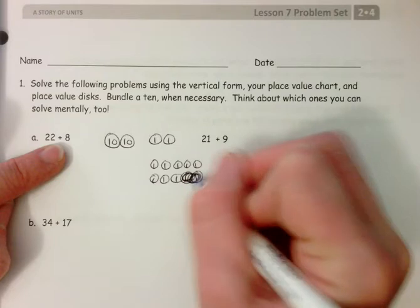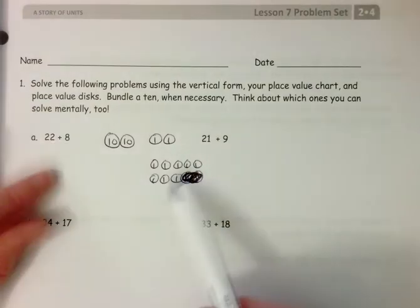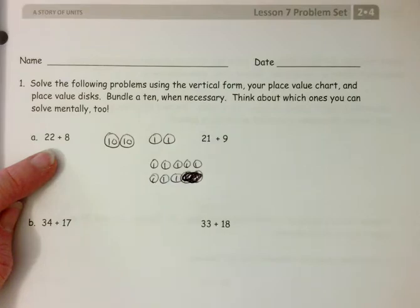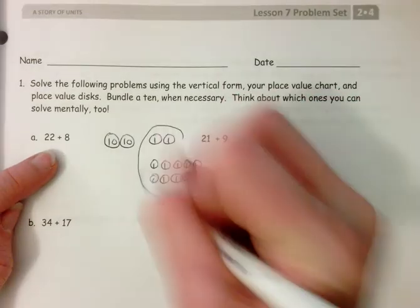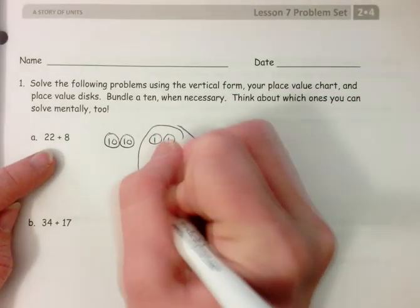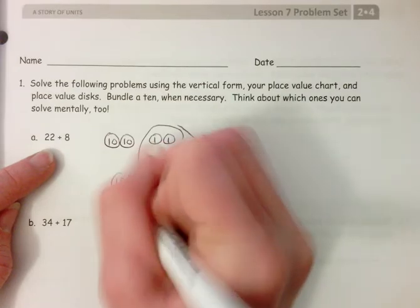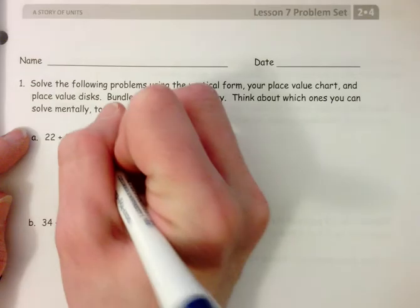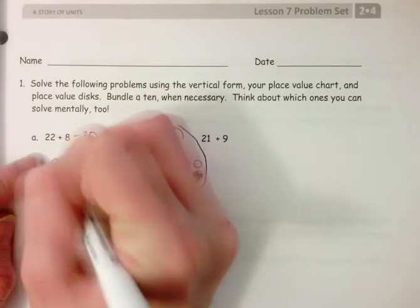Sorry, I was overzealous. After I have my 22 and my eight, can I make a bundle of 10? Yes. I'm going to circle them and I'm going to show that I've made a new 10. I now see that I have 30.